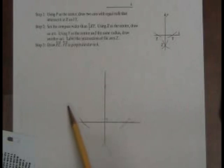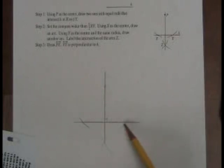Then you set your compass for more than half of the distance between these two arcs, and you set it here and you come down here and you make that arc.